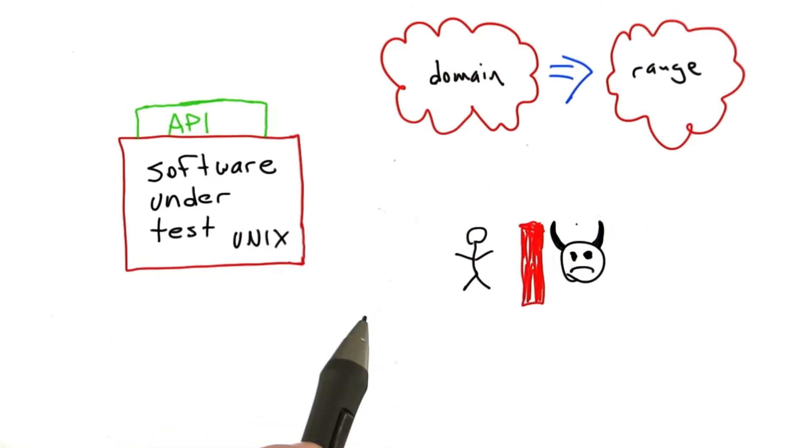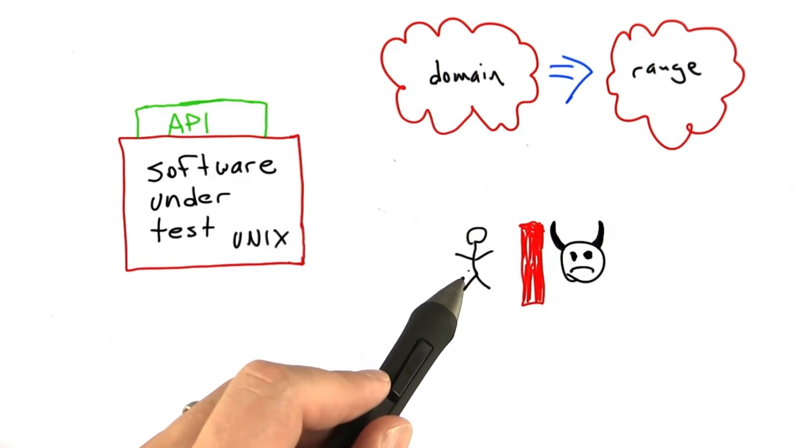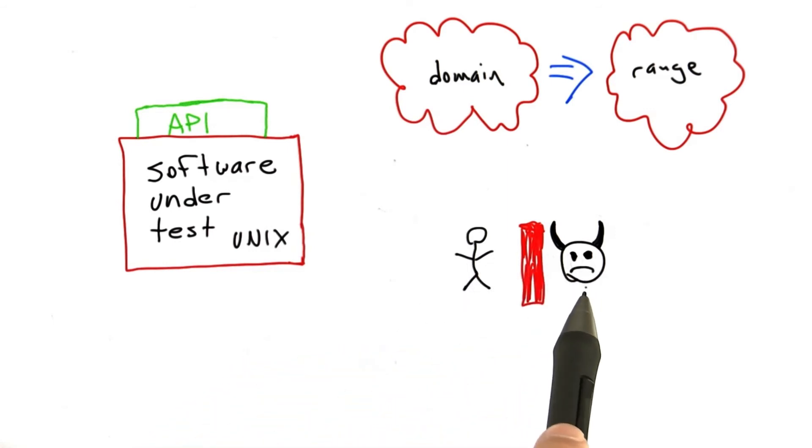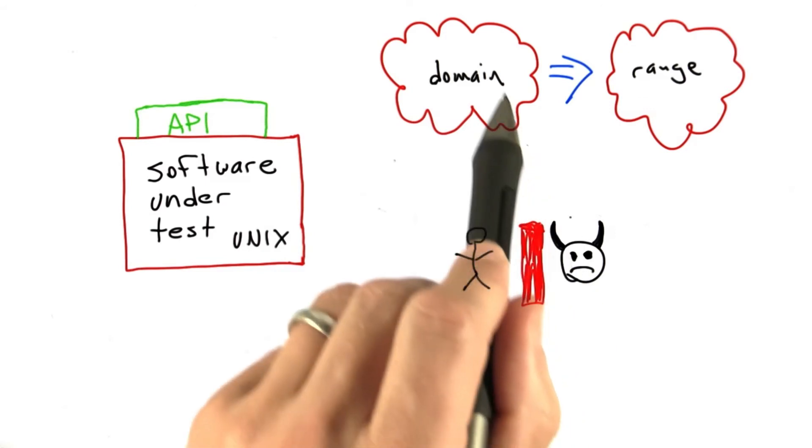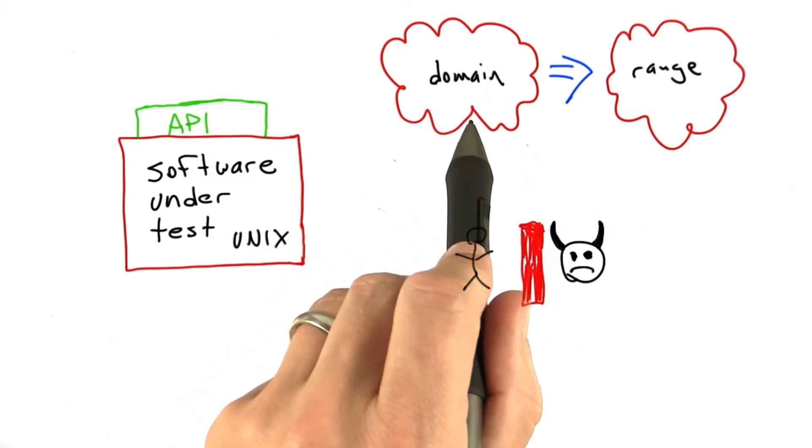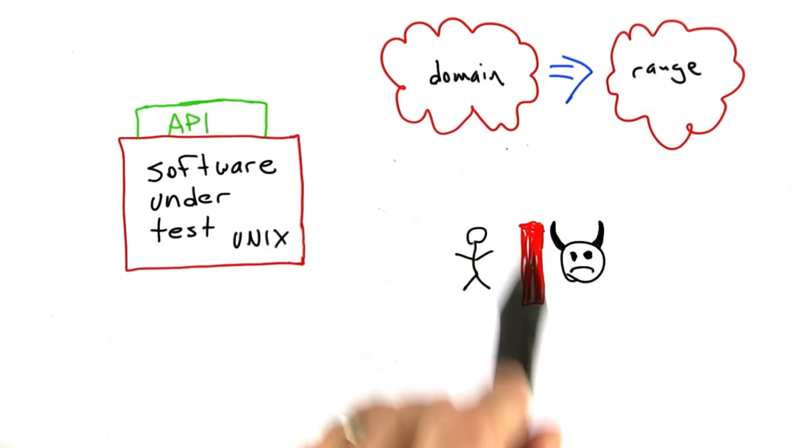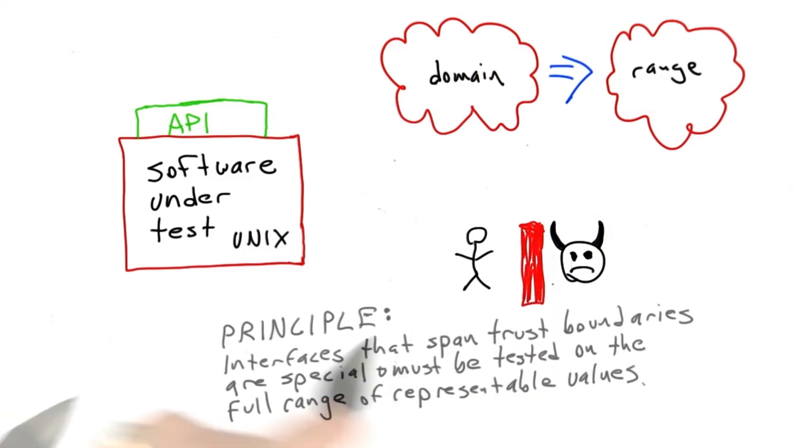We're getting at something very fundamental about testing and working towards another testing principle. The principle is that if you have an interface or API that represents a trust boundary—a boundary between part of the system that we trust and users on the other side who we can't trust to stay within the domain of the API we're implementing—then we have to test that API with all possible representative values, not just ones that developers happen to think are in the domain.